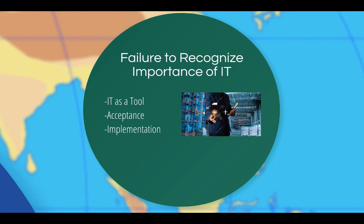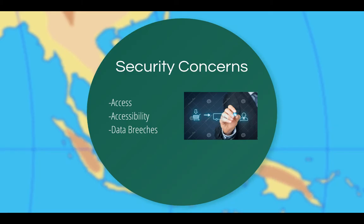The same issue arose when smartphone technology allowed emails to be received by cell phones — managers were not checking email as often as organizations required to keep up with disseminated information. Security concerns with access and accessibility cause major issues for companies. Data breaches such as the breach of Sony's email server and the Office of Personnel Management, which resulted in the release of 4 million social security numbers of present and past federal civil servants, are examples of the severity of these security concerns.